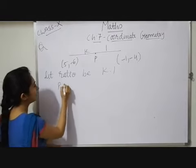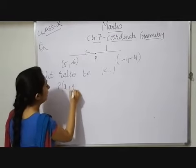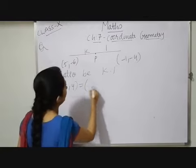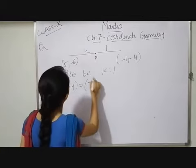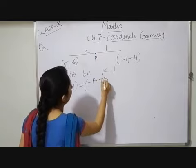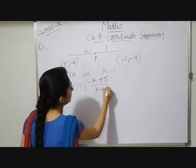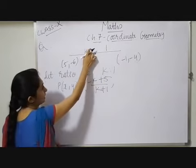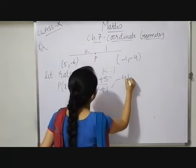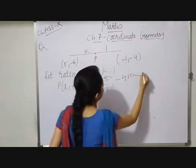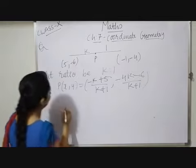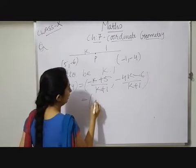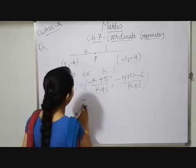So P (x, y) here I am writing -K plus 5. Again cross multiplication, K plus 1. Again cross multiplication with Y coordinate. So -4K minus 6 upon K plus 1. So which is equals to, okay, it is simplified.